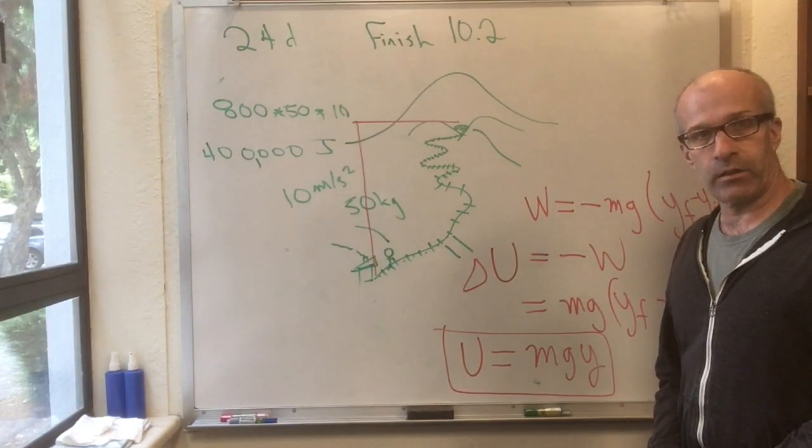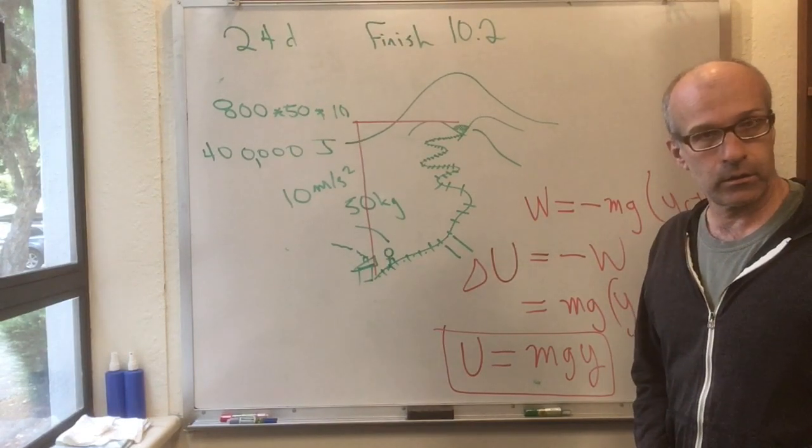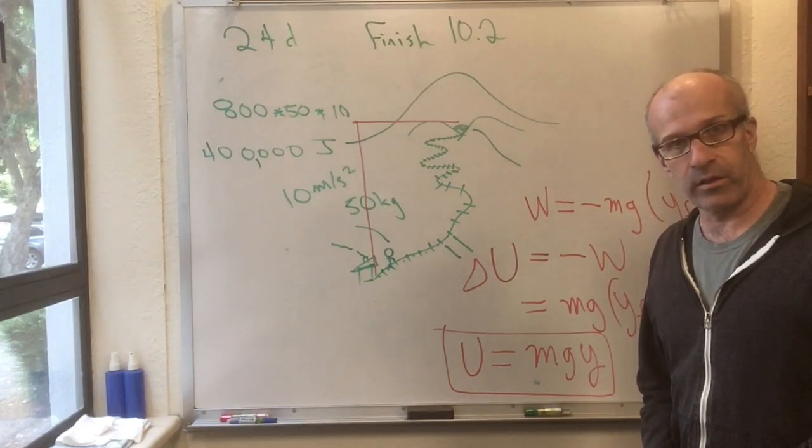So, that's the end of 10.2. 10.3 is on the potential energy in springs.